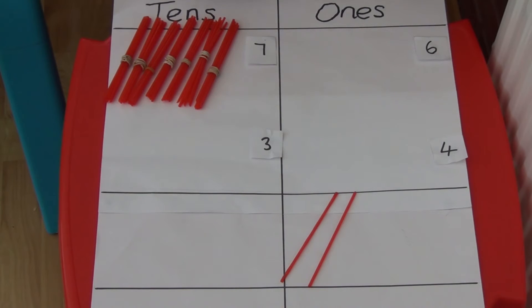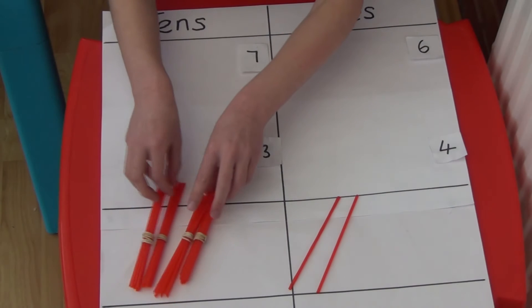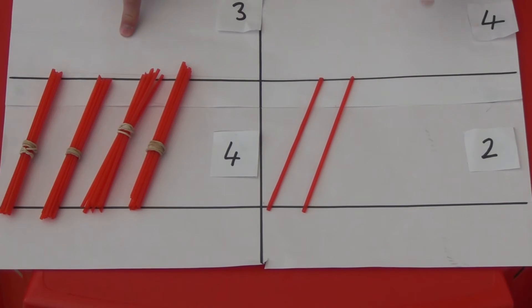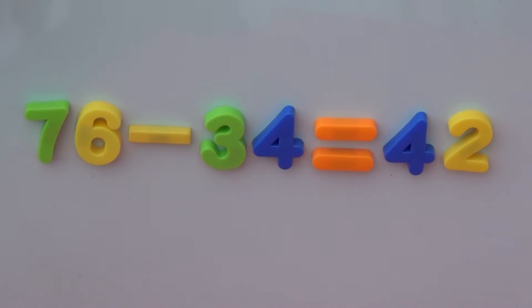If I do the same with the bundles of tens straws, 7 take away 3 leaves us with 4. 4 tens and 2 ones means we have 42 left. So 76 take away 34 equals 42.